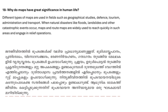Why do maps have great significance in human life? Different types of maps are used in fields such as geographical studies, defense, tourism, administration and transport. When natural disasters like floods, landslides and other catastrophic events occur, maps and route maps are widely used to reach quickly in such areas and engage in relief operations.